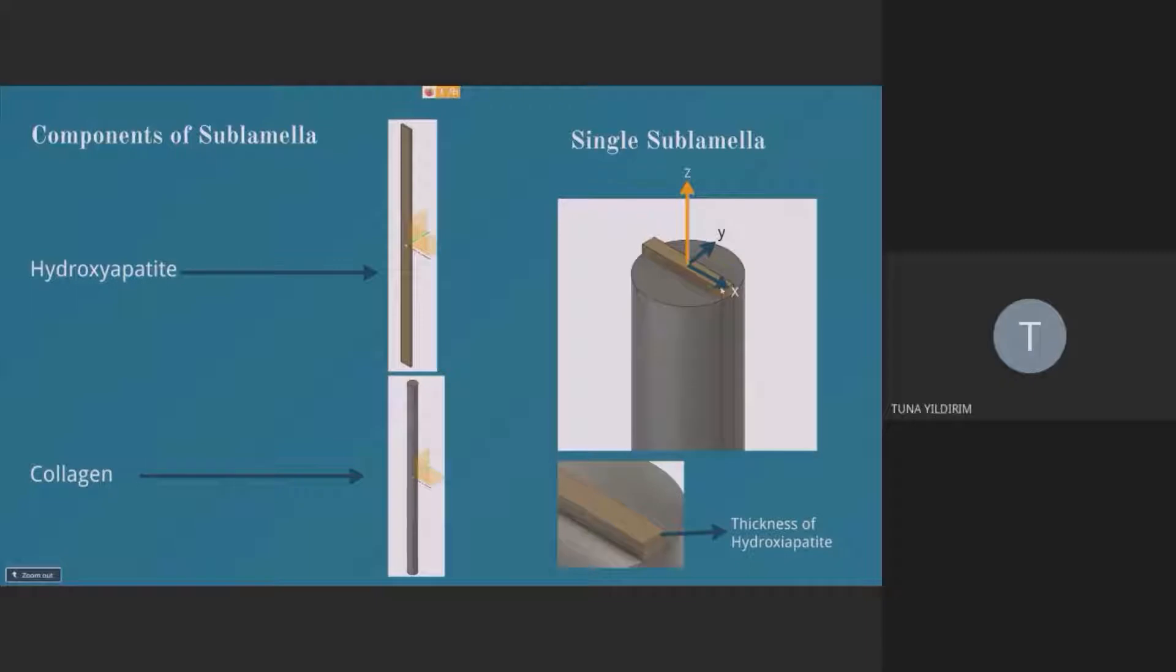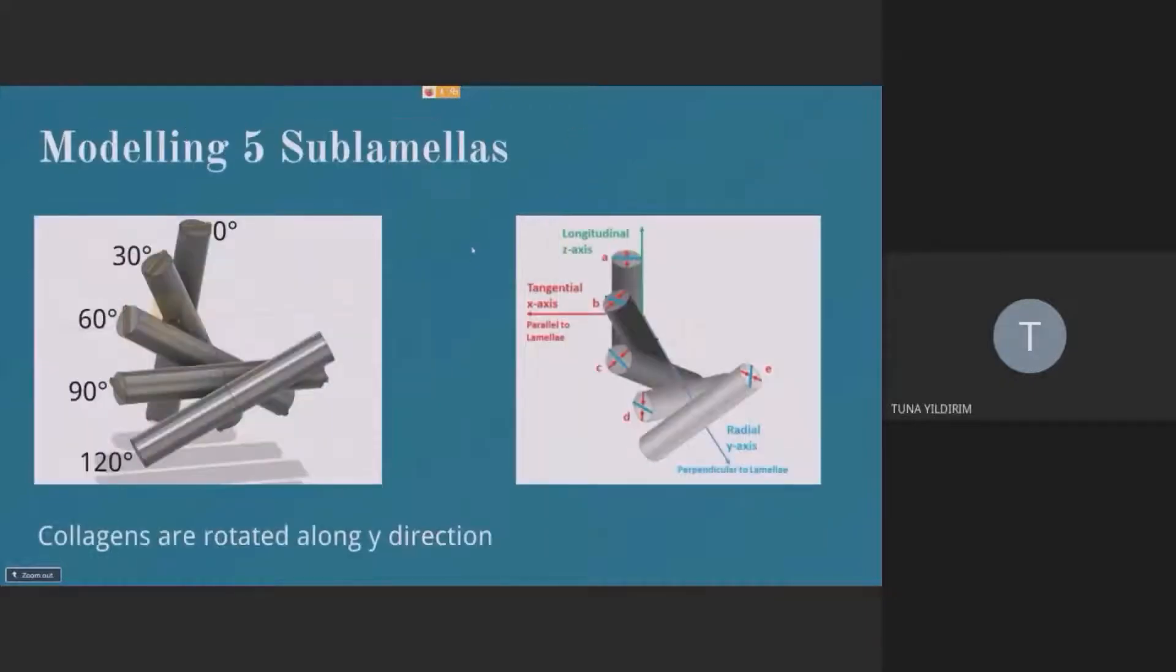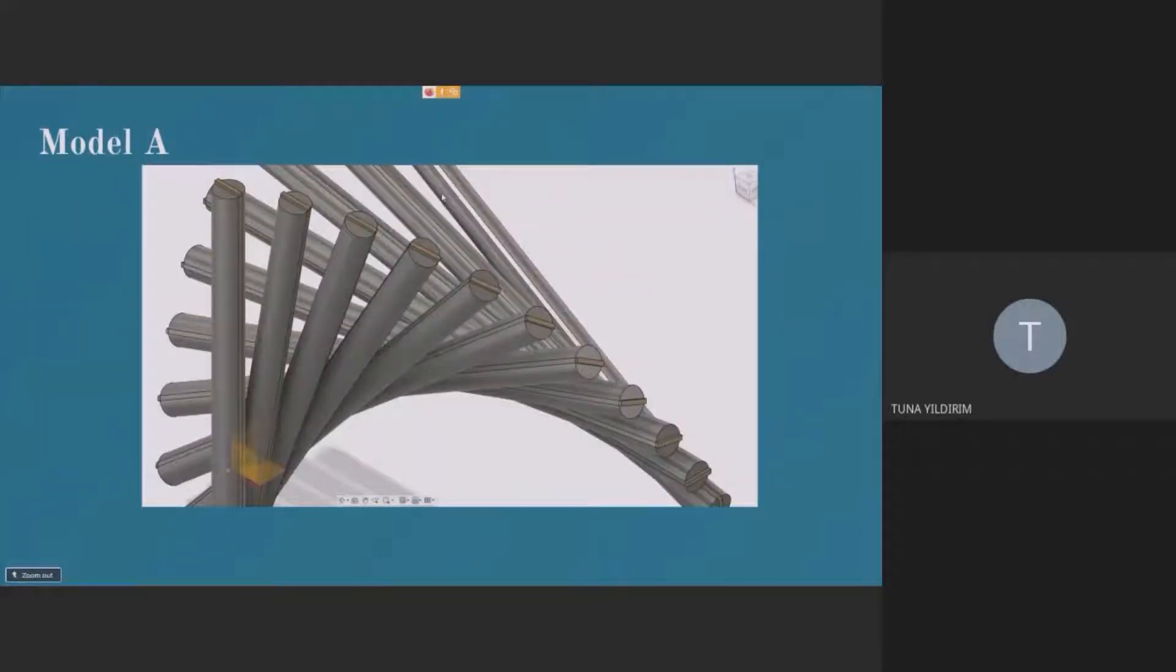So for model A, that reduction of length will occur in the y-axis. And this is the first model for 30 degree intervals that are built up, and these are our axes. And this is model A with 10 degree intervals to get more accurate and detailed results for anisotropy ratios.